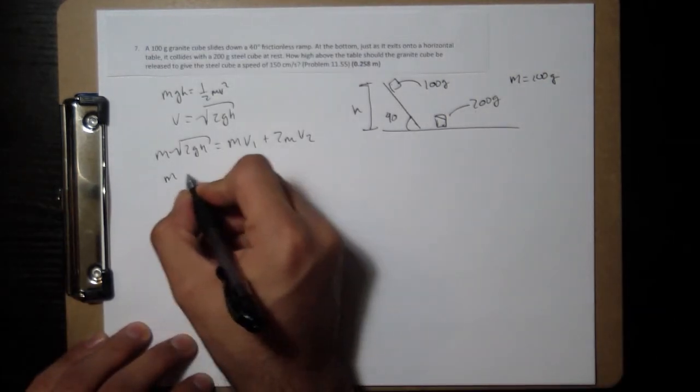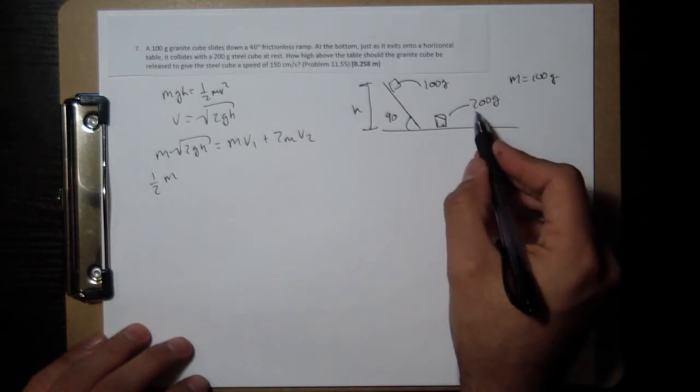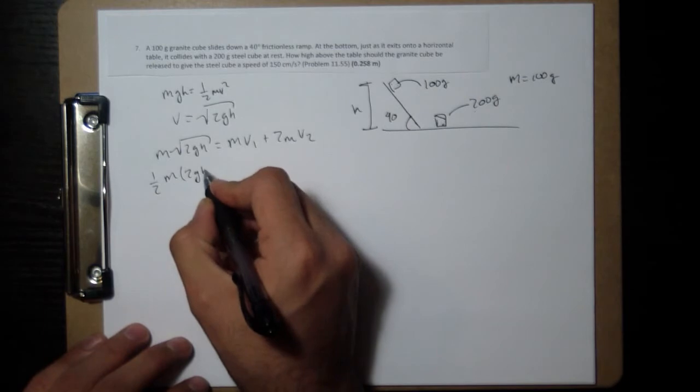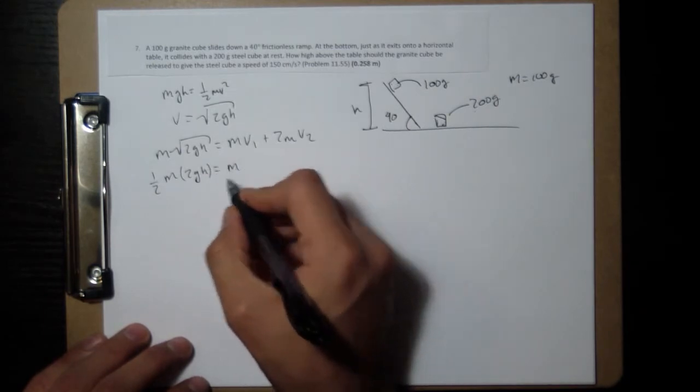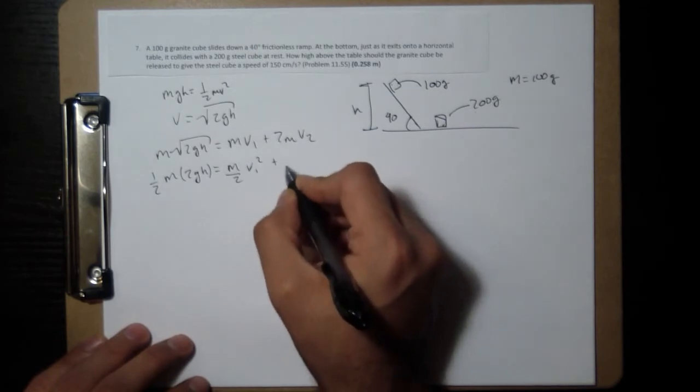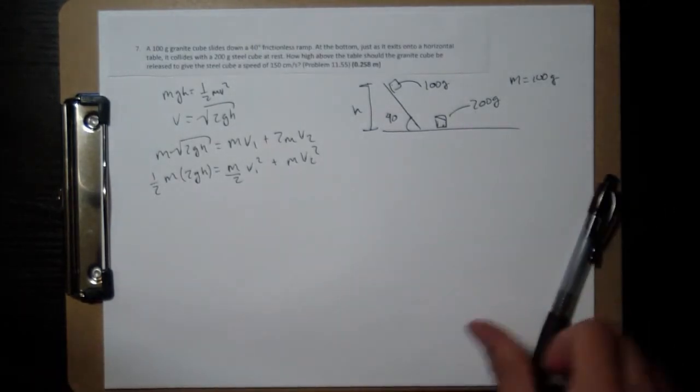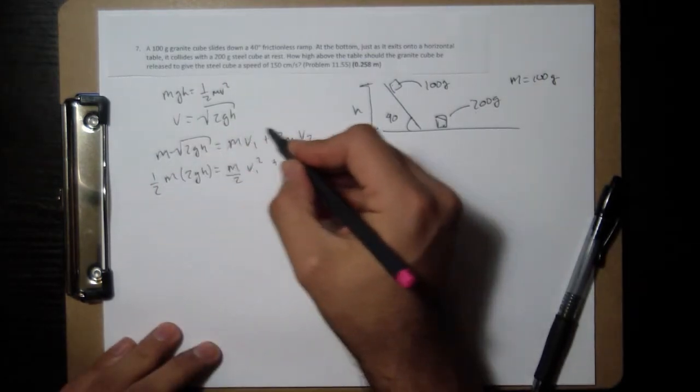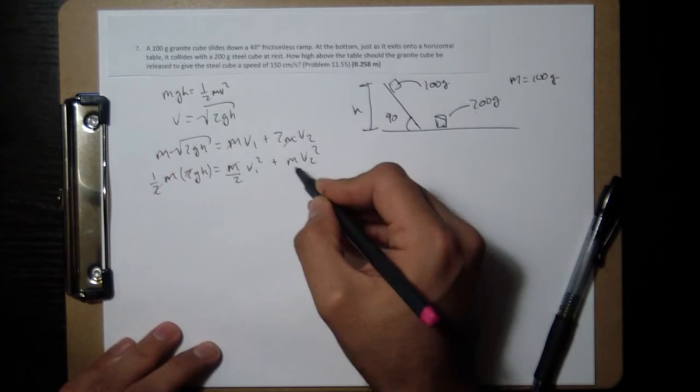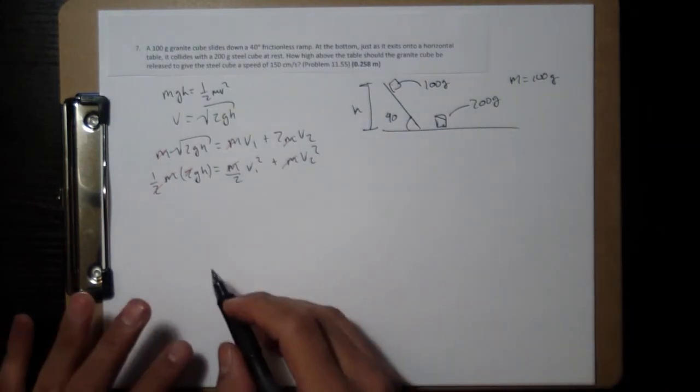Conservation of kinetic energy, 1/2 mv squared. Well, v squared for the initial is going to be this squared, so it's 2gh. 1/2 v1 squared plus 1/2 mv2 squared. And let's do some cancelling. The masses cancel. The 2 cancels here. The masses cancel.